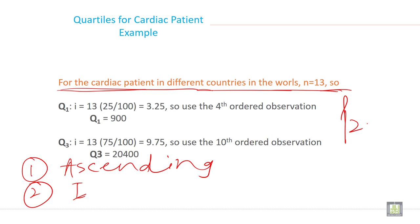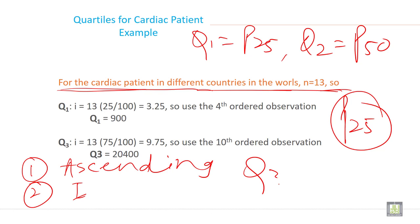If you want to calculate the first quartile, it is P25 because Q1 equals 25%, Q2 equals 50%, Q3 equals 75%, and Q4 equals 100%.